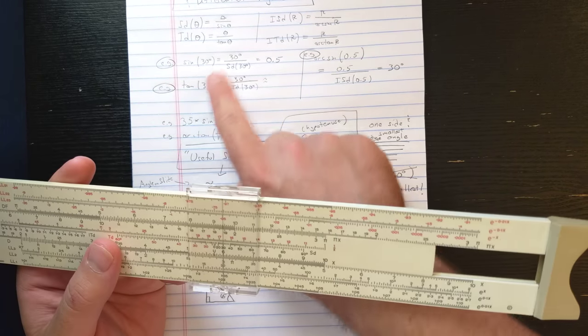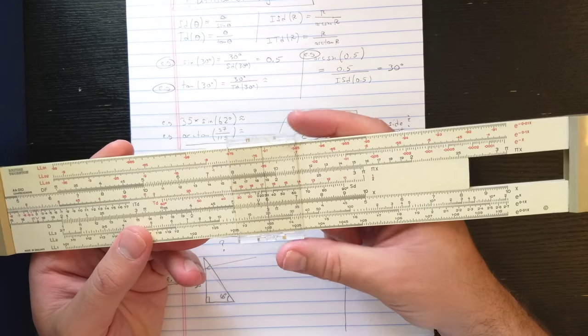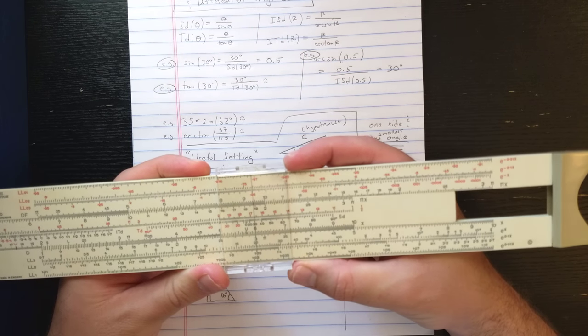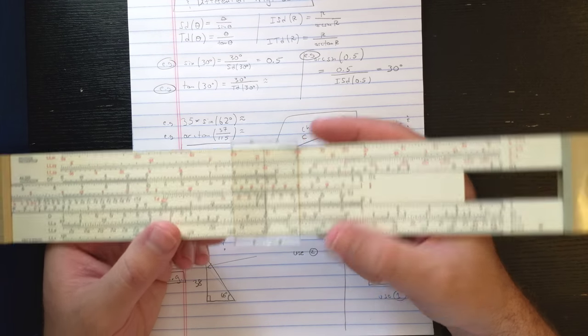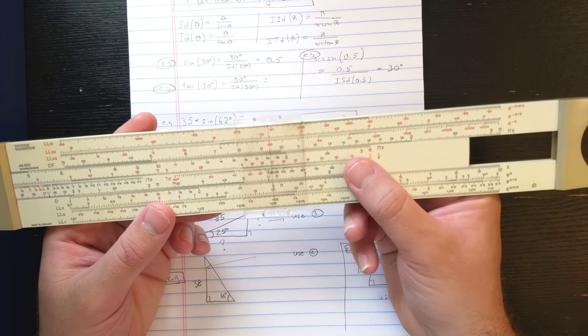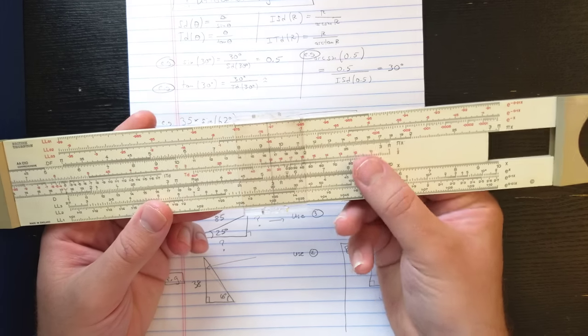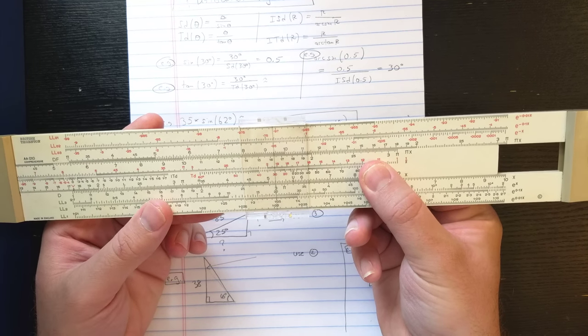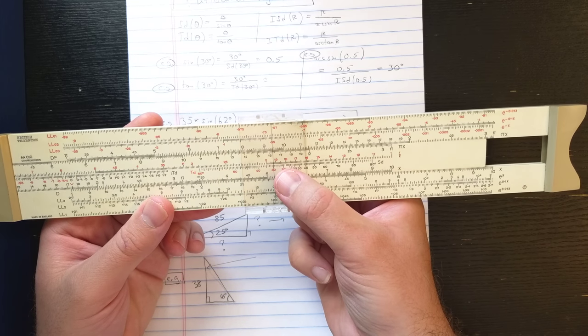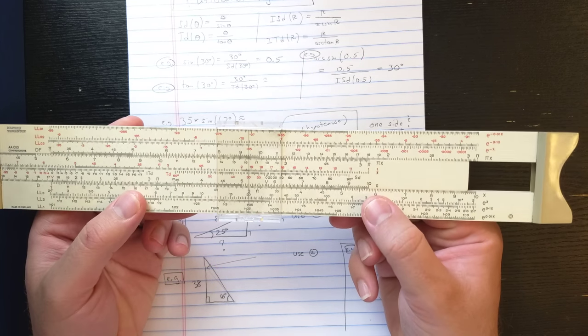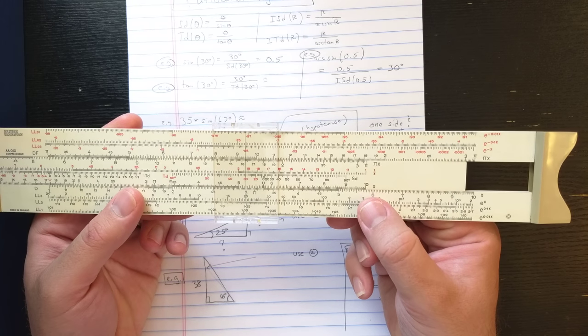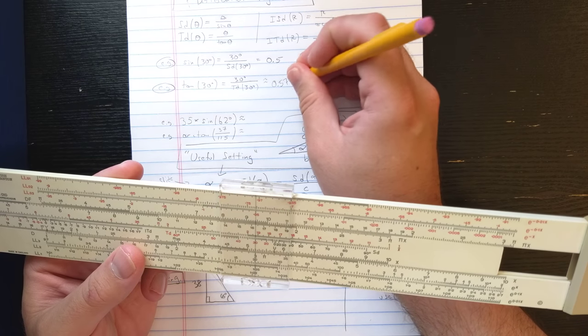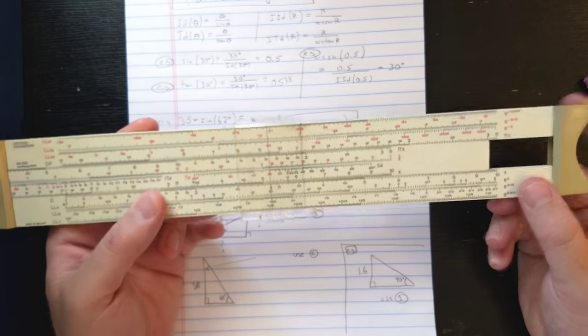Let's do a tangent. For tangent of 30 degrees, first I would find the 30 on the D scale. So tangent of 30 should be 30 divided by the differential trig of 30. You see that the tangent scale reads backwards, so it's in red on this slide rule. So I have 30 divided by TD of 30, it looks like 578 or so. That's 1 over square root 3, right? Correct.